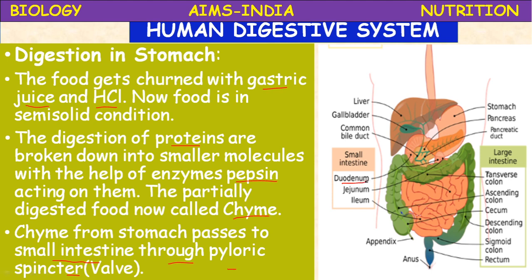The gastric juice contains two main enzymes: pepsin and gastric lipase, along with hydrochloric acid. HCl provides the acidic medium for pepsin to act on proteins, breaking them into peptones and polypeptides.